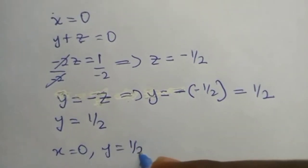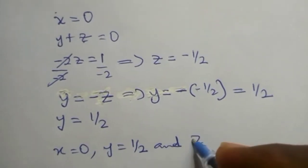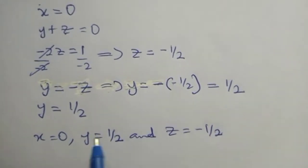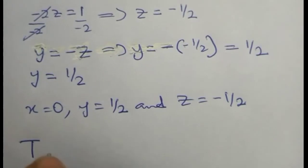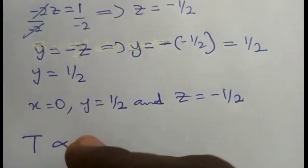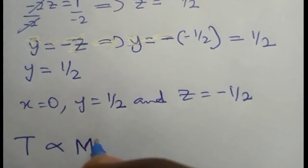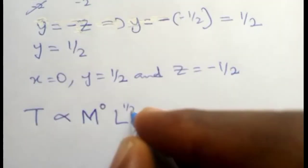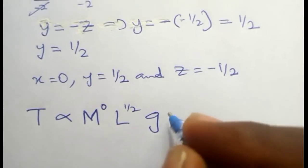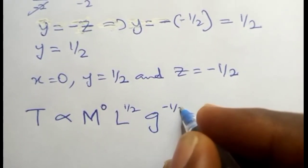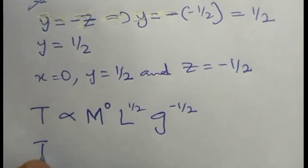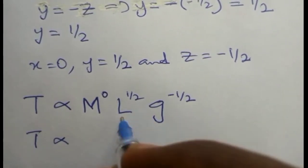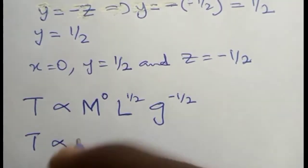Now we are going to substitute this into the equation we have here. We have T is proportional to M, remember M is raised to x which is 0. L raised to y which is 1 over 2, and g raised to z which is minus 1 over 2. Period T will be proportional to M raised to 0, which is 1, so we leave it aside.